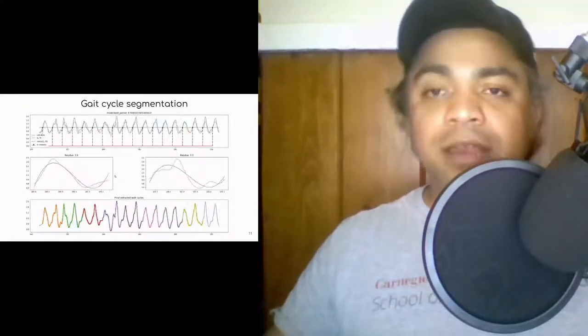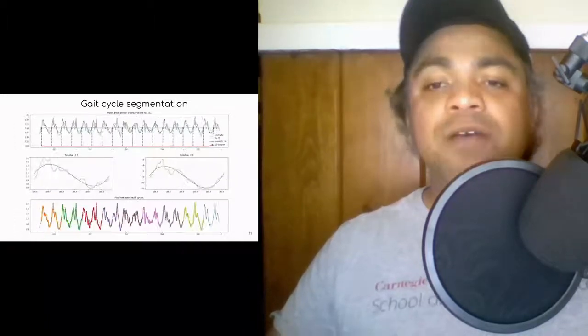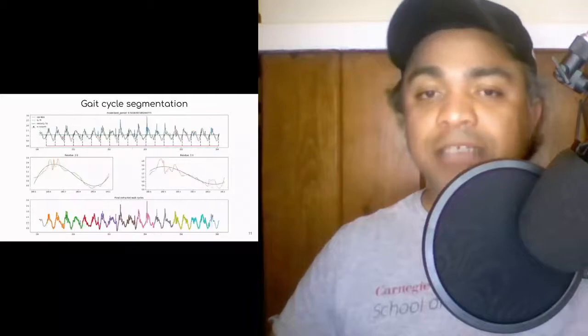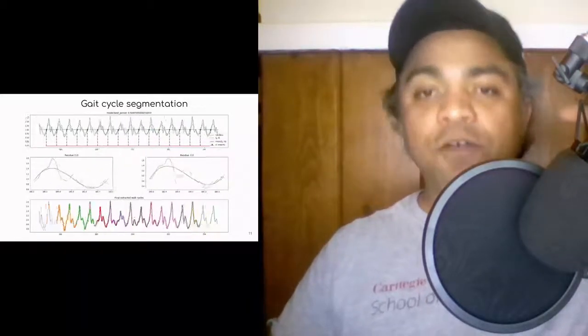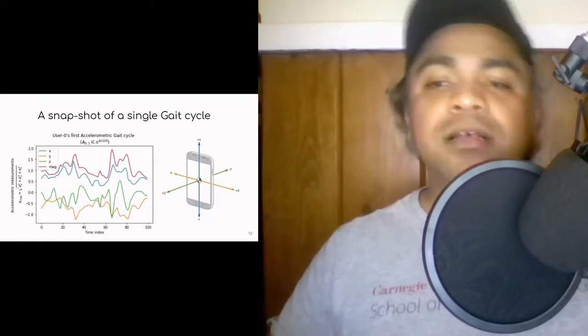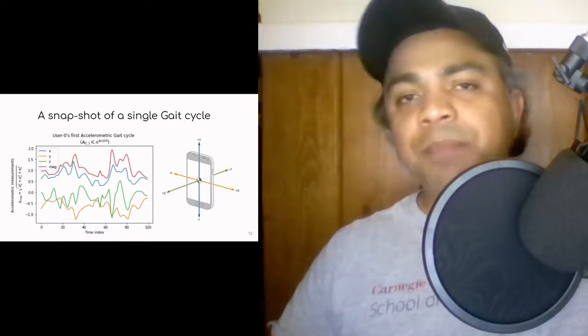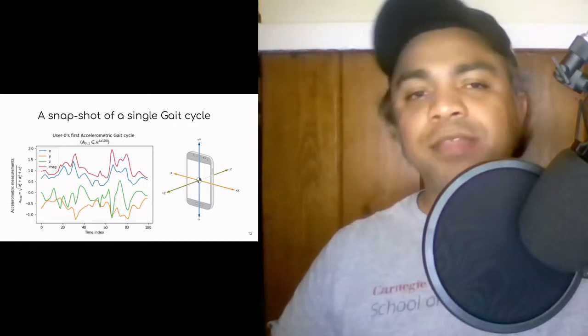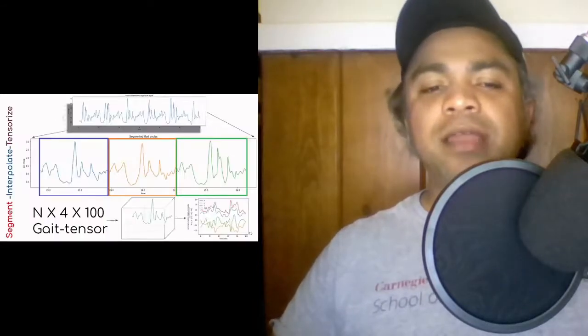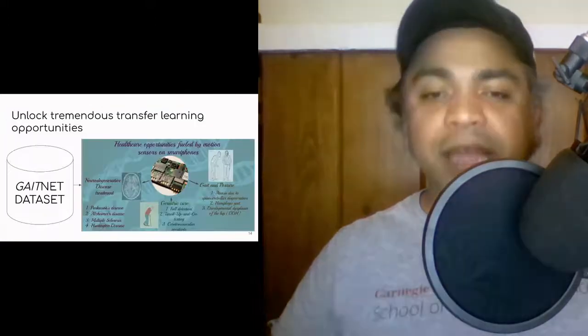Before beginning to do any kind of machine learning or classification, one needs to perform gait cycle segmentation that involves segmenting the time series of accelerometric data into slices of gait instants, and here is the snapshot of a single gait cycle. So typically, after performing the slicing or segmentation, you resample everything or interpolate everything to size 100 or size 200, thereby resulting in an n by 4 by 100 tensor that is then harnessed to create a gait data set.